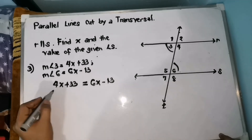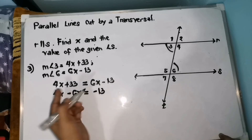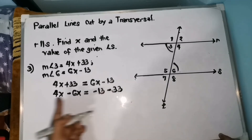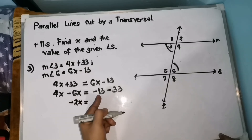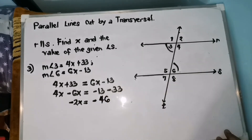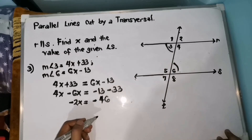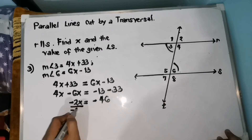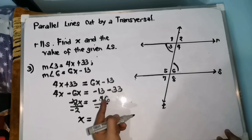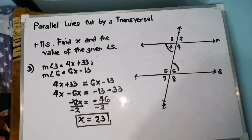Let us find the value of X. We move 6X to the left side: 4X minus 6X equals negative 13, then move positive 33 to the right: negative 13 minus 33. So 4X minus 6X is negative 2X equals negative 46. Applying the multiplication property of equality, divide both sides by negative 2: since negative divided by negative is positive, 46 divided by 2 is 23. So the value of X is 23.